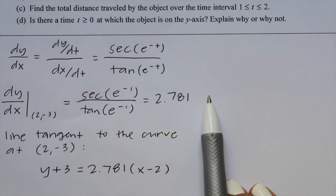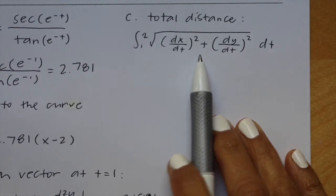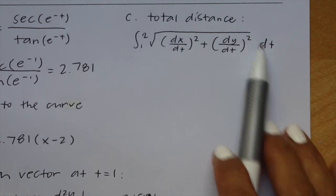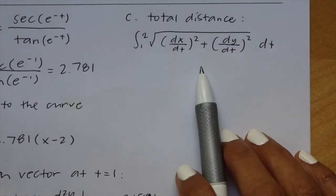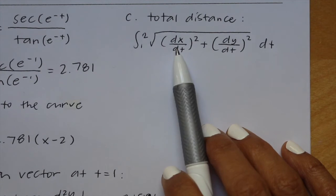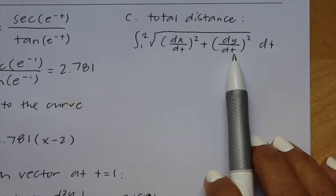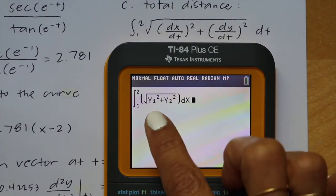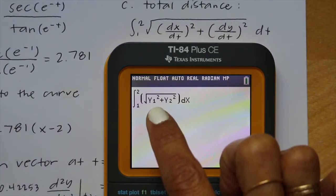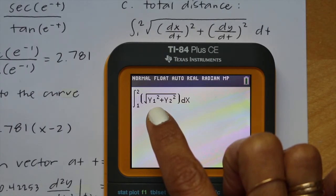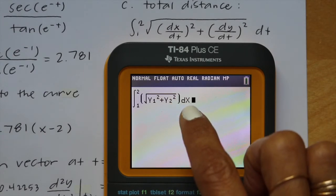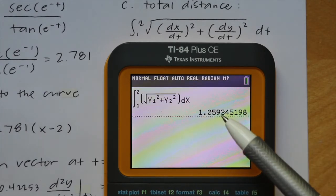Part C: Find the total distance traveled by the object over the time interval from 1 to 2. The total distance formula is the integral from 1 to 2 of the square root of (dx/dt)² + (dy/dt)² dt. Using the calculator (math 9), with y1 as dx/dt and y2 as dy/dt, we evaluate the integral and get 1.059.